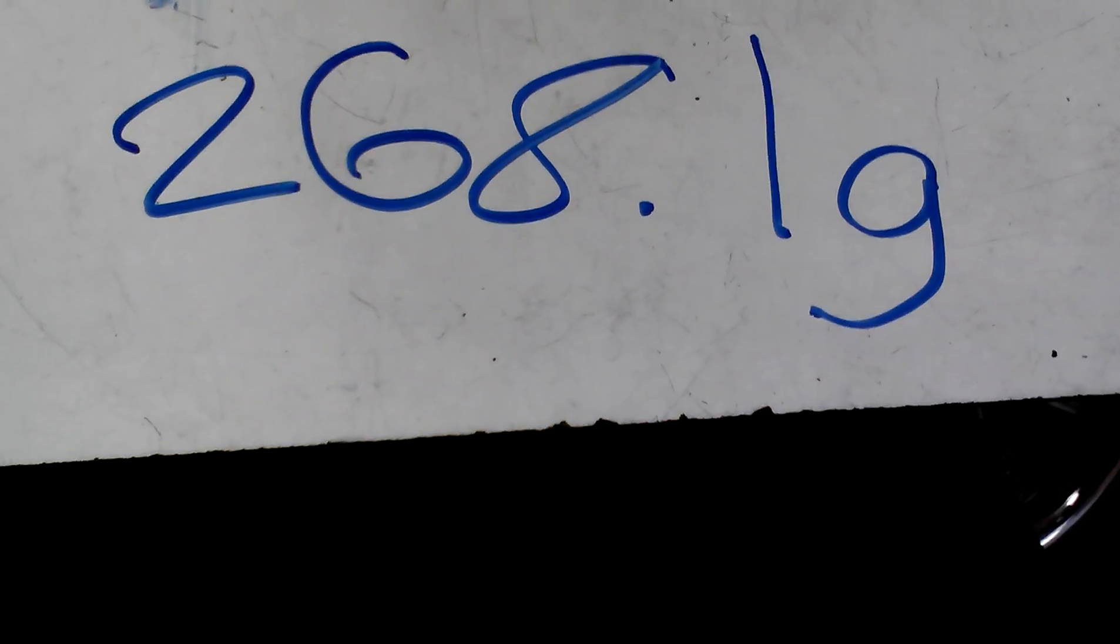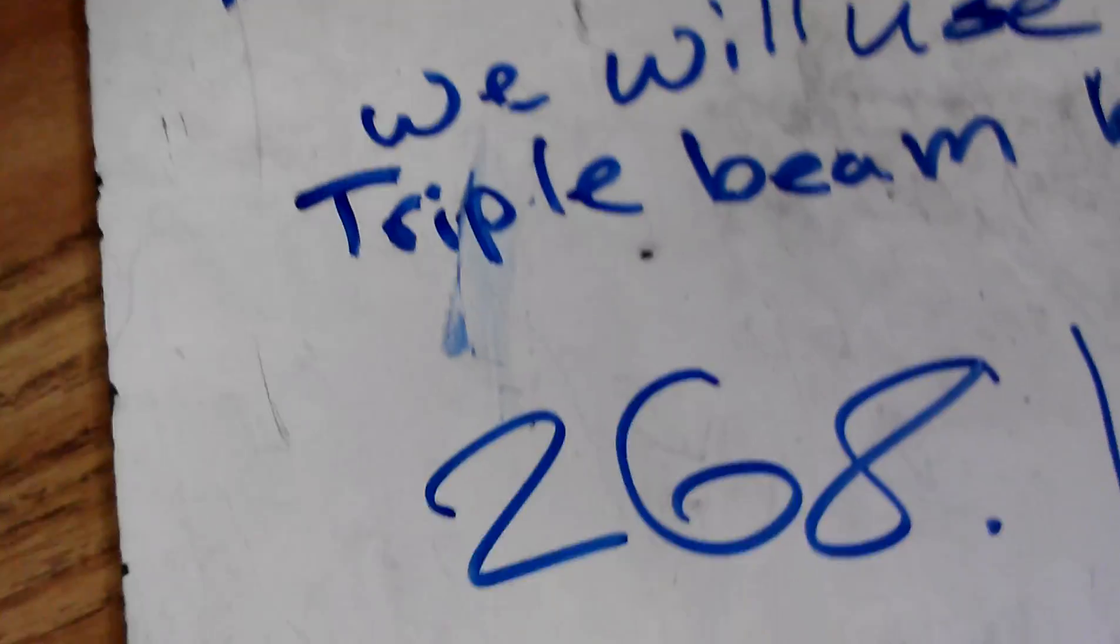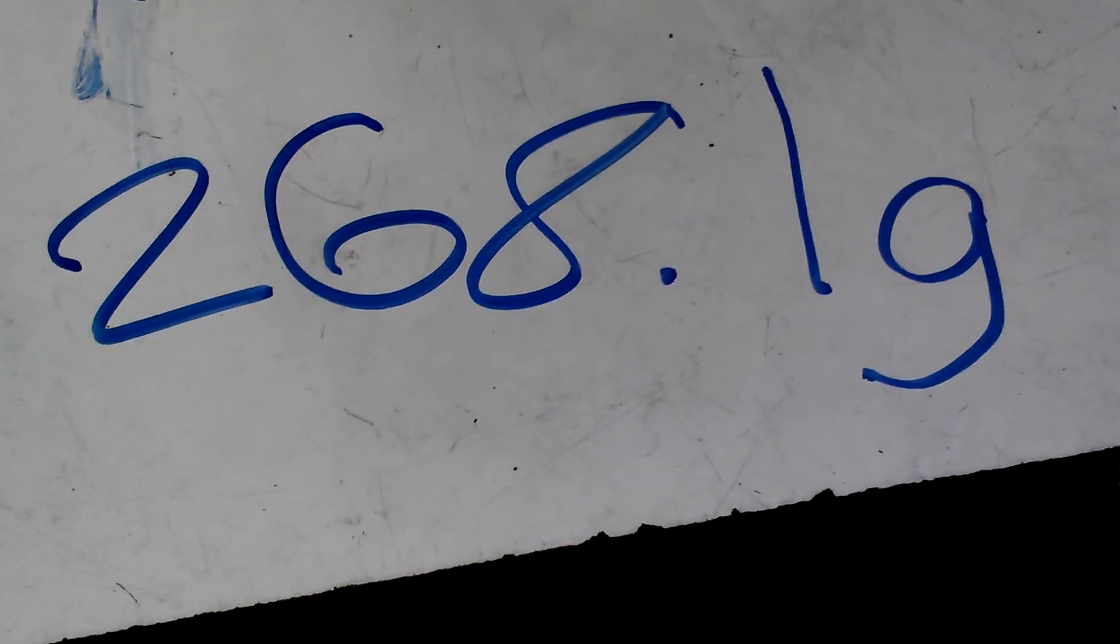So, it would be point instead of just... And you always want to try to label it, so you know what it is. And that is how you measure an object's mass using a triple beam balance. Thank you.